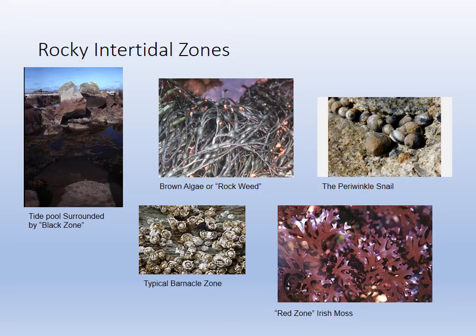You can see the black zone on the rocks — that's the blue-green bacteria growing on them. The rockweed zone is characterized by rack or rockweed, a brown algae. There are periwinkles crawling around in the periwinkle zone, a typical barnacle zone covered with barnacles, and then the red zone with Irish moss, nori, and palmaria — the red algae we commonly use.